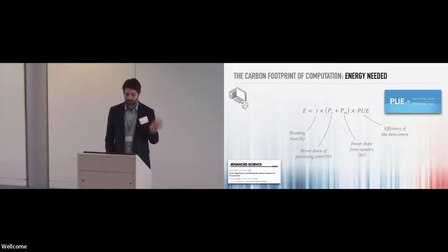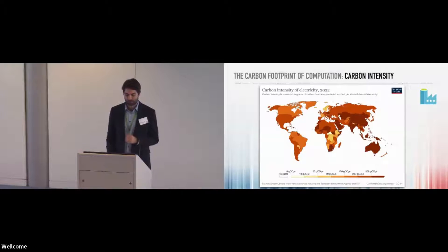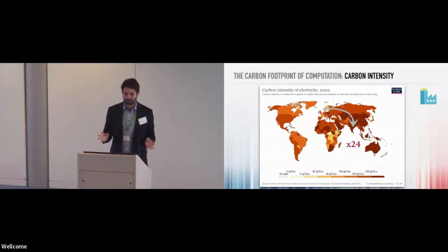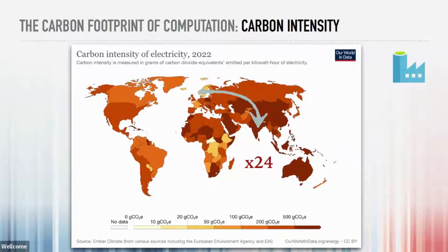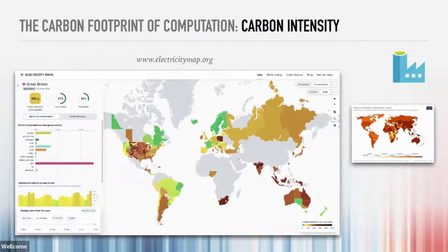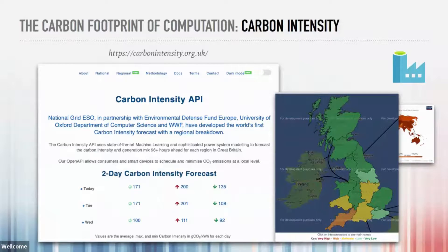We have our Green Algorithms paper where we dive into why we include certain aspects. Carbon intensity is where we have great discrepancies between countries — two countries doing exactly the same task with exactly the same hardware can have completely different carbon footprints just because of the source of electricity. If you're interested in real-time values, the Electricity Map is really interesting — you can look at a country in real time and see where the electricity is being imported from. Here in the UK, we have a carbon intensity app, and if you look at the map, it varies not only per country but also per region and by time of day.